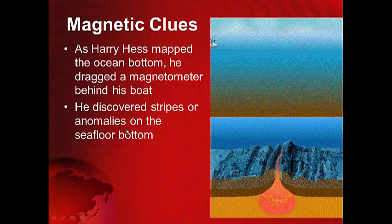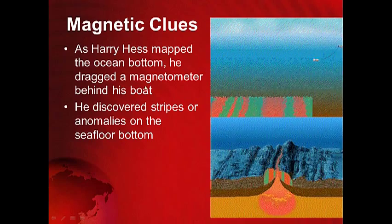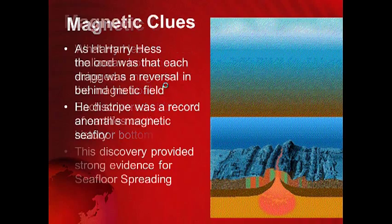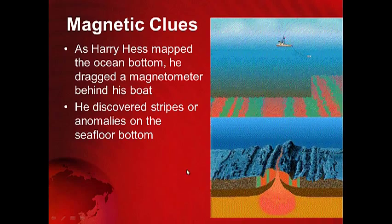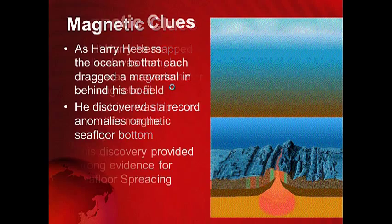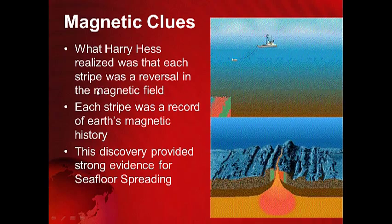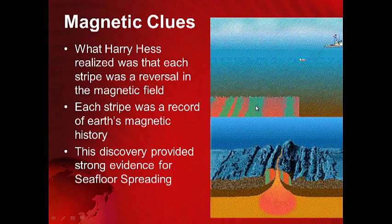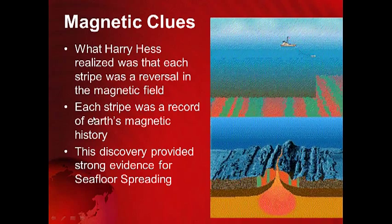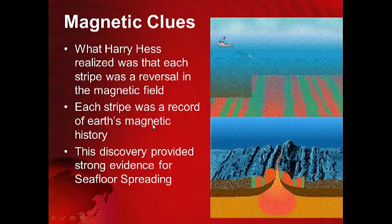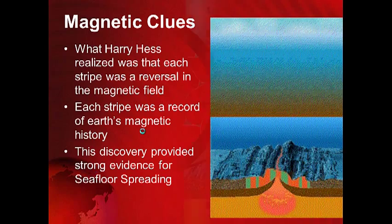For magnetic clues: Harry Hess mapped the ocean bottom — he dragged what's called a magnetometer behind his boat and discovered stripes or anomalies on the seafloor. What Harry Hess eventually realized was that each stripe was a reversal in the earth's magnetic field — so compasses would have pointed north, south, north, south with each stripe. Each stripe was a record of earth's magnetic history, and this discovery provided strong evidence for seafloor spreading.